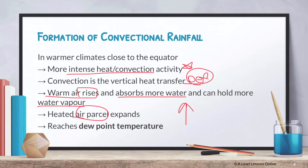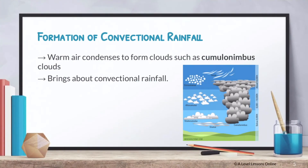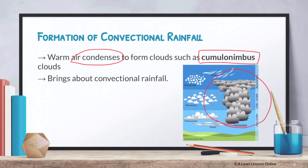As the air rises, it will reach the dew point temperature — the point at which clouds start to condense. When condensation occurs, certain types of clouds form, for instance cumulonimbus clouds. Clouds only form when they reach dew point temperature. This is how a cumulonimbus cloud looks, and it is what brings about convectional rainfall.